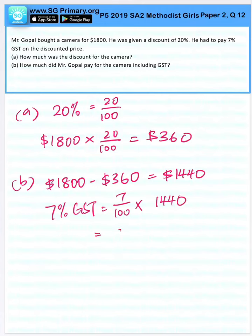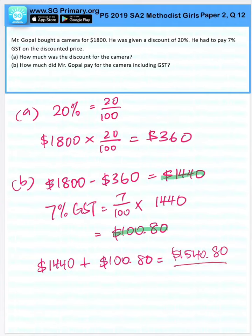which will give us $100.80. So we just need to add the discounted amount plus GST. $1,440 plus $100.80 will give us $1,540.80.